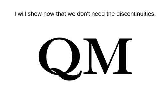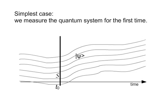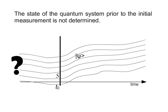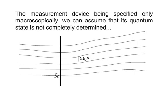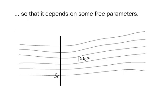I will show now that we don't need the discontinuities. In the simplest case, we measure the quantum system for the first time. The state of the quantum system prior to the initial measurement is not determined. After the first measurement, an initial condition is stated and the state is determined without discontinuities. The measurement device being specified only macroscopically, we can assume that its quantum state is not completely determined, so that it depends on some free parameters.